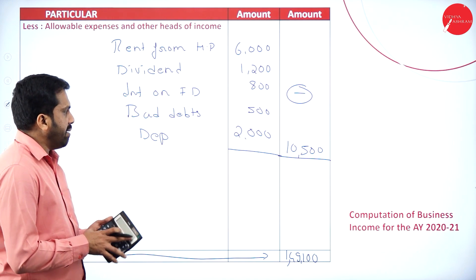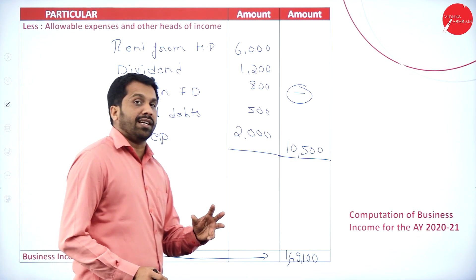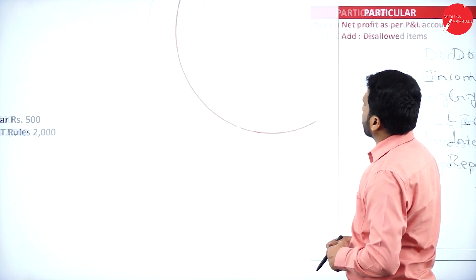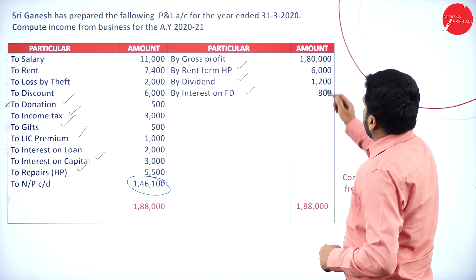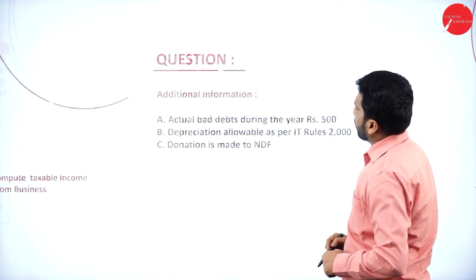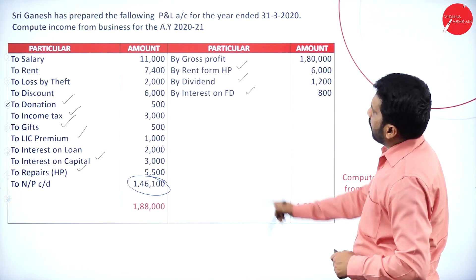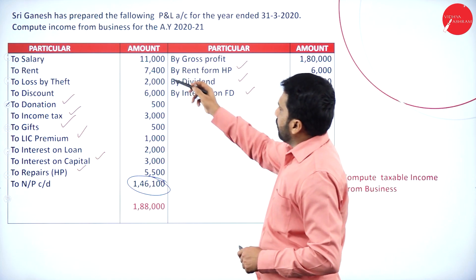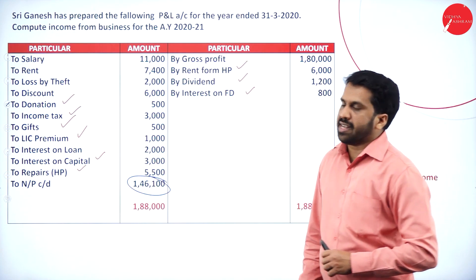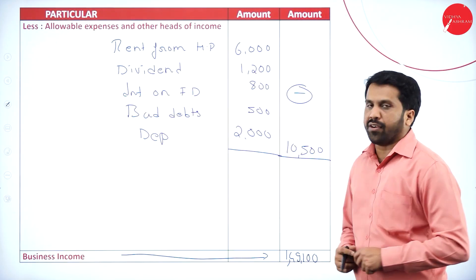What is your business income? You have to add all the disallowed expenses and subtract all the allowed items and other head incomes. These are the items not related to business that we have taken. We got business income of 1,49,100.